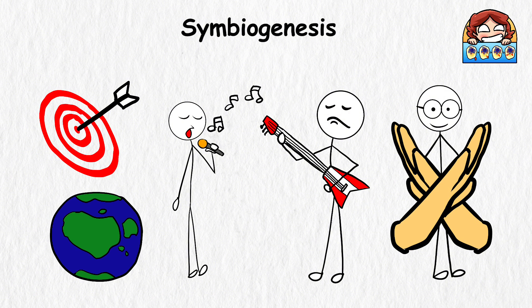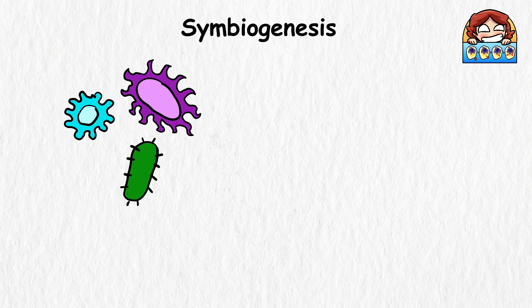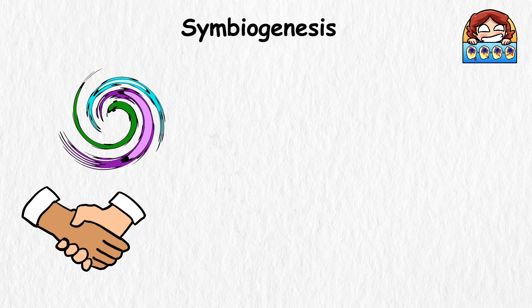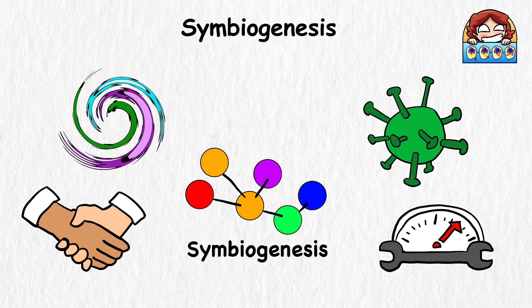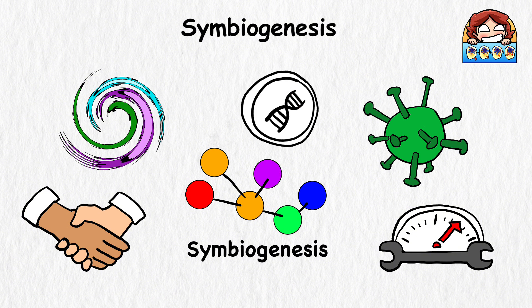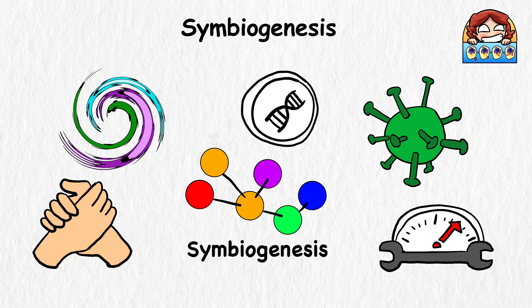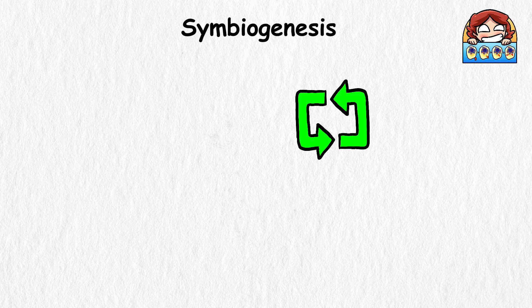In the biological world, certain organisms, especially microorganisms, can merge or work together to create new, more complex life forms. So rather than gradual changes over time, symbiogenesis emphasizes sudden leaps in evolution through partnerships because they realize they could be better off working together instead of evolving independently.